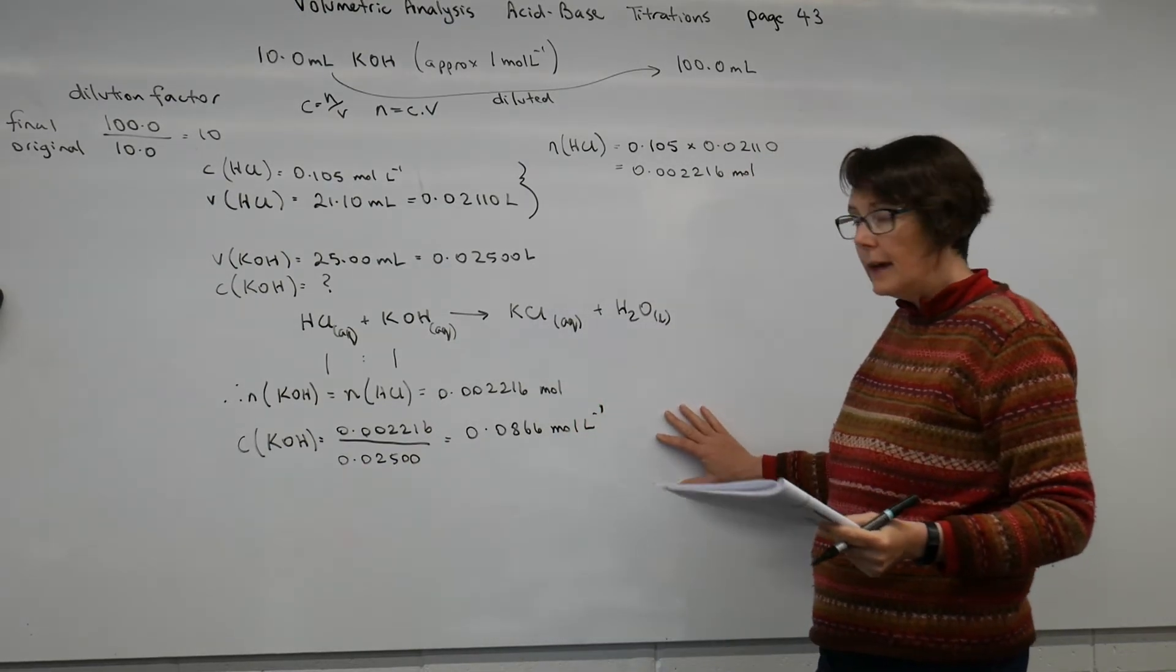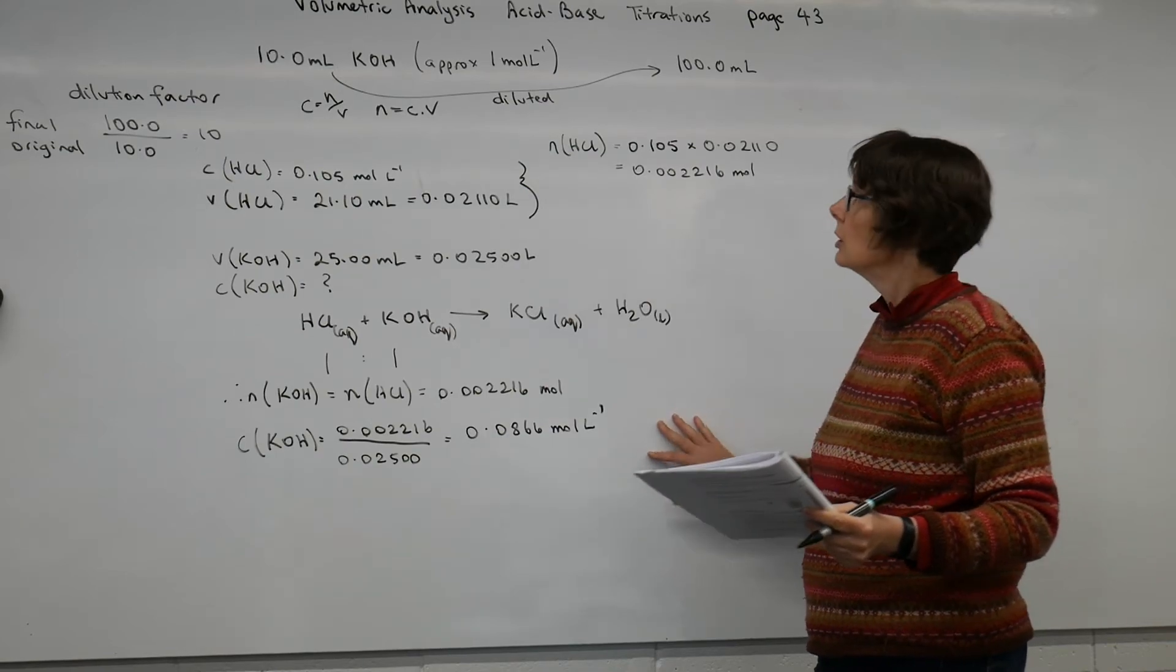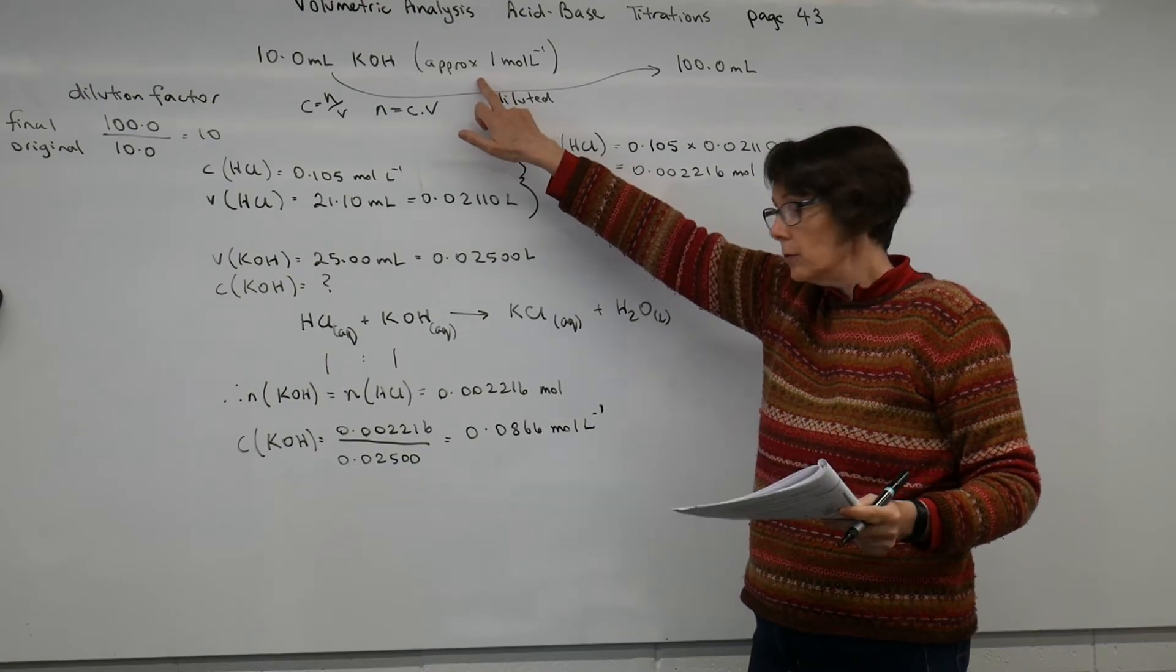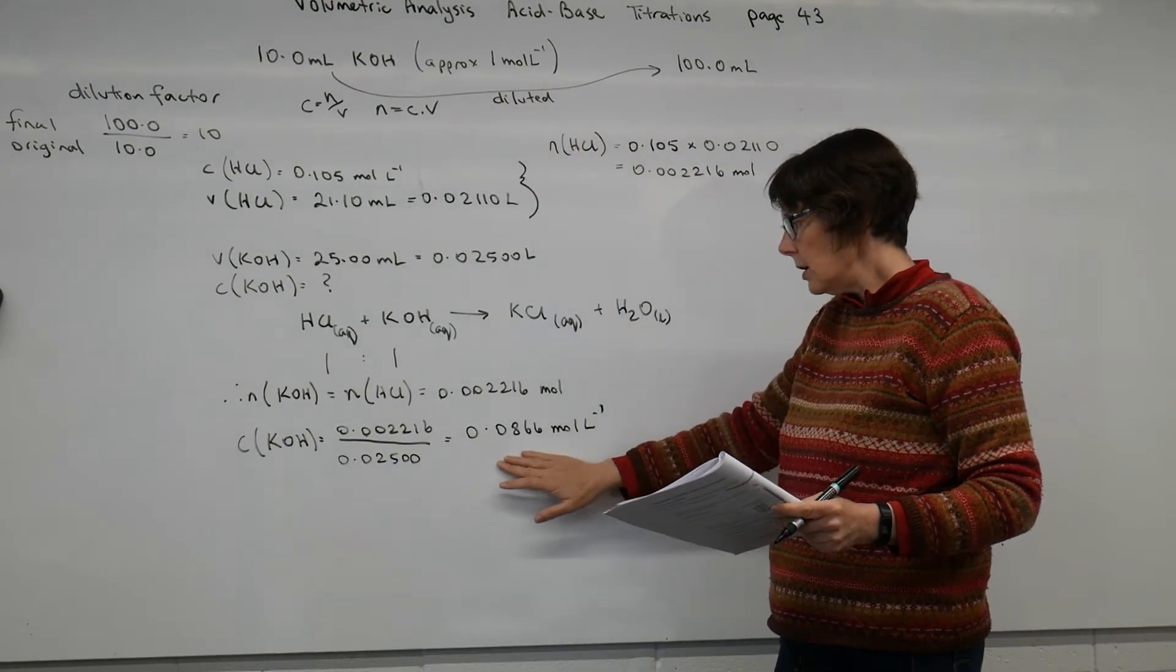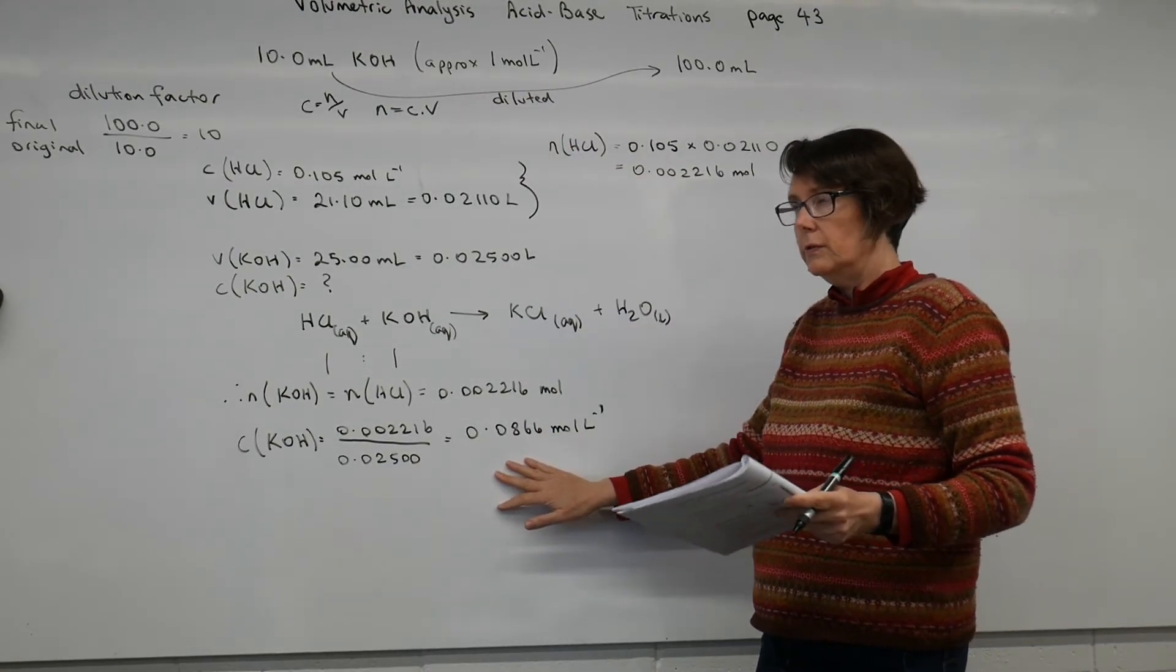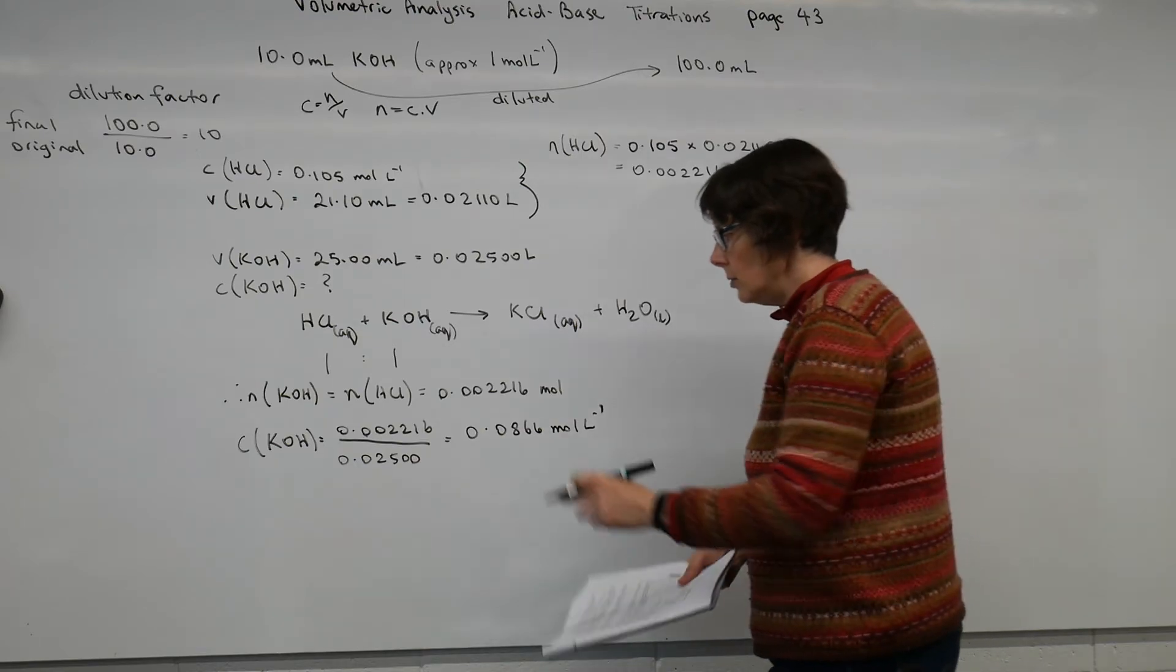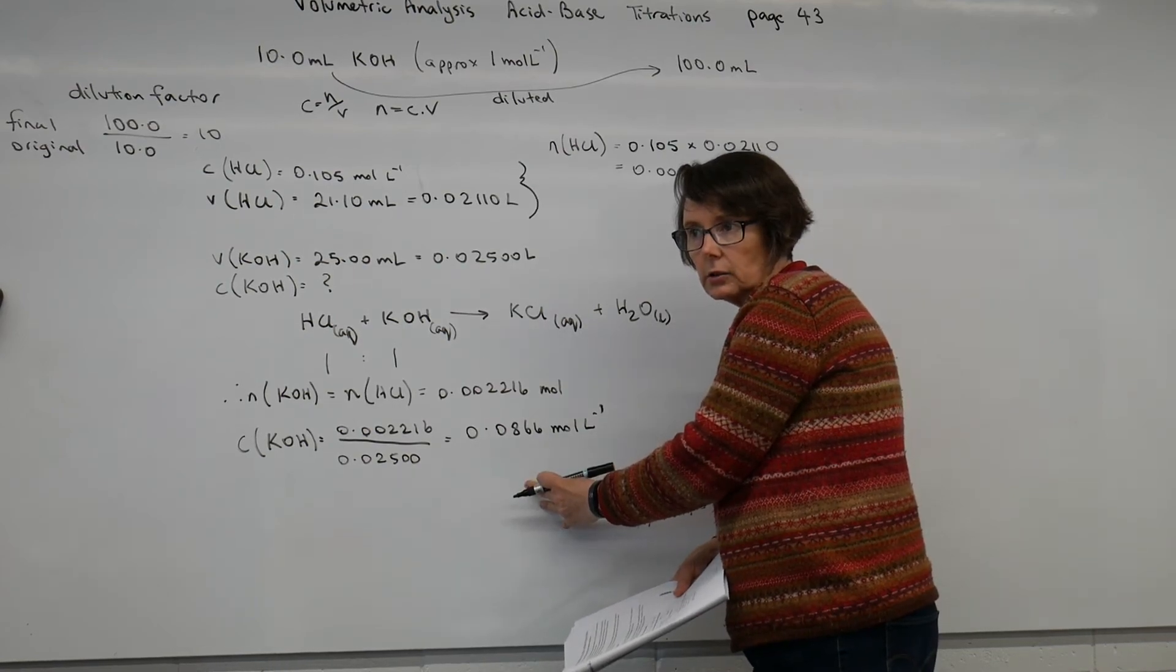And that makes sense. Because we were told that it was approximately one mole per litre up here before we diluted it. So if I wanted to find out the accurate original concentration, I would multiply this by 10, the dilution factor.